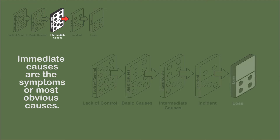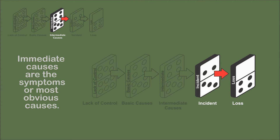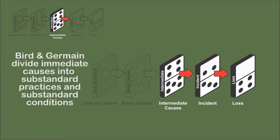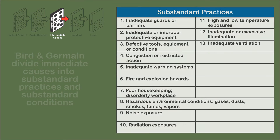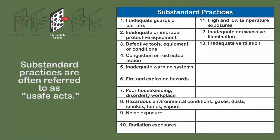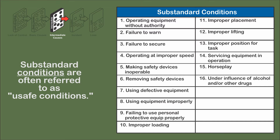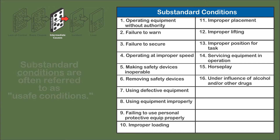Causes are layered. Immediate causes are the symptoms or most obvious causes. Traditionally, they are unsafe acts or human behavior, and unsafe conditions or environmental conditions. Moving on from these terms, Byrd and Germain label them as substandard practices and substandard conditions. They also suggest avoiding the term error, which suggests blame of the individual. Their emphasis on industrial or manufacturing settings is obvious from the categories and terminology used.